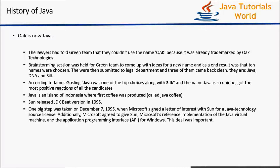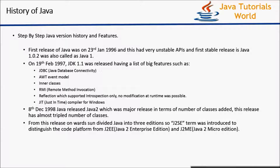Now we will see Java version history. The first release of Java was on 23rd January 1996, and it had very unstable APIs. The first stable release was Java 1.0.2, also called Java 1. The next release of Java was JDK 1.1, released on 19th February 1997. It included important features like JDBC, AWT event model, inner classes, RMI, reflection API. In Java 1, the Java compiler took more time to compile a .java file; this was resolved in JDK 1.1 for Windows.